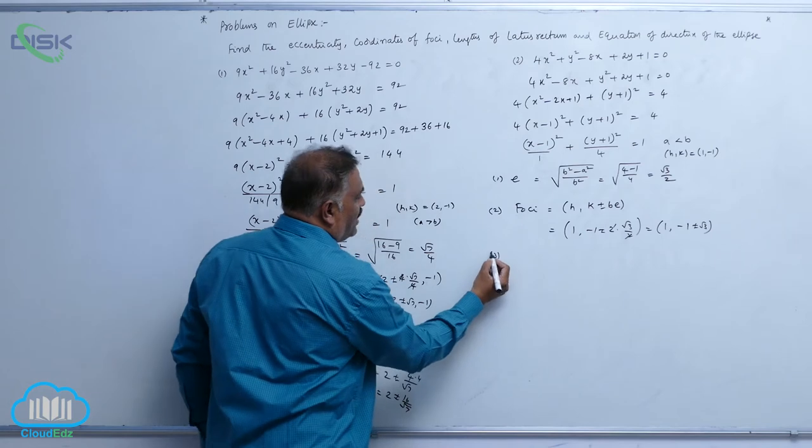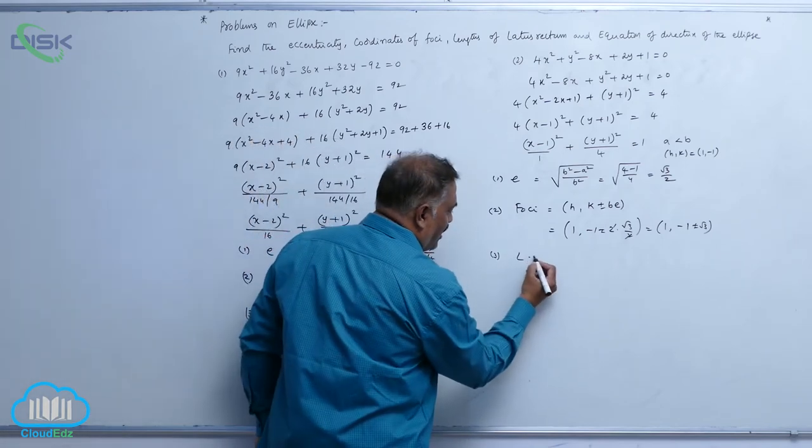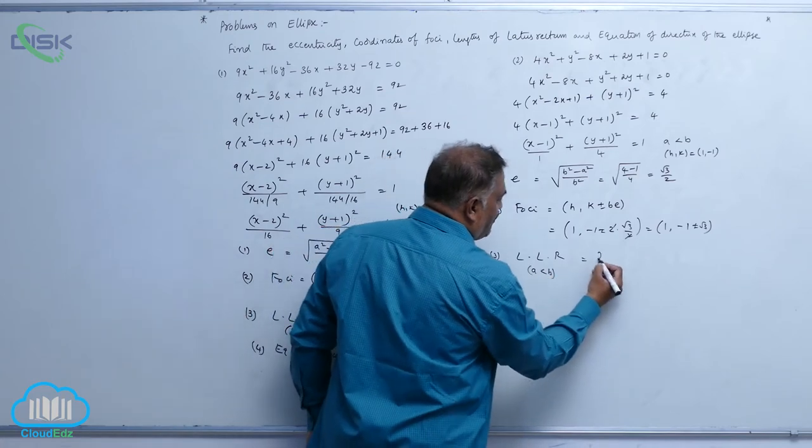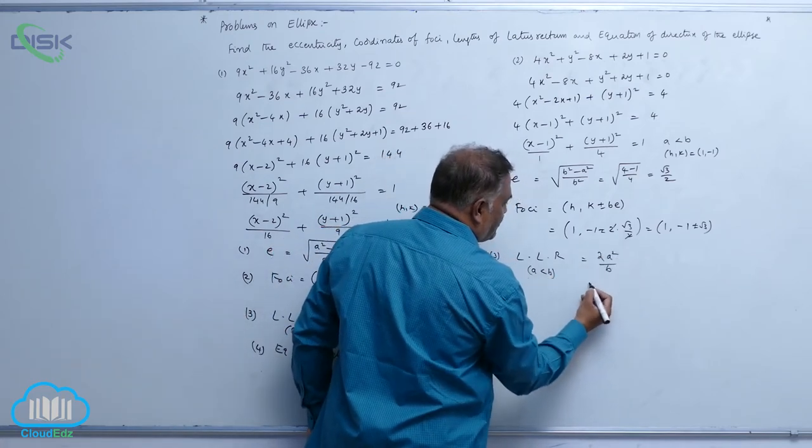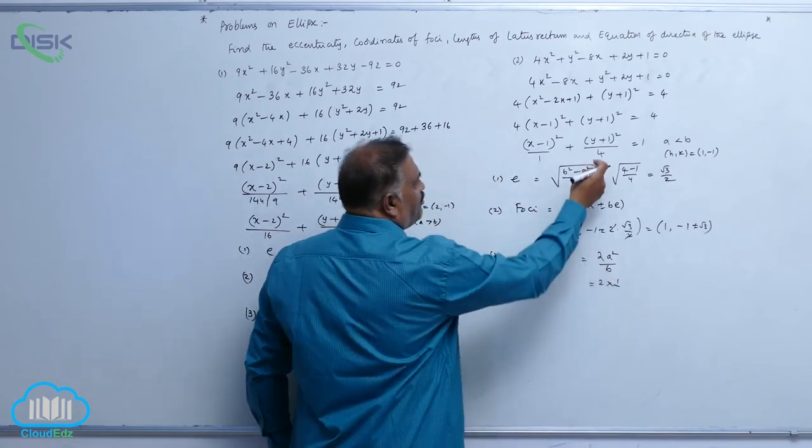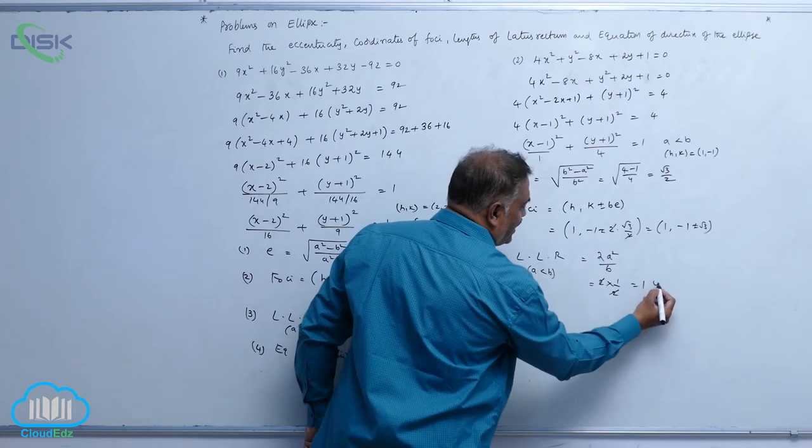Now, let us come to the third point, LLR, lattice rectum. A is less than b. So the formula is 2a square by b. In place of a, we are having 1, b is 2. 2, 2 gets cancel, 1 unit.